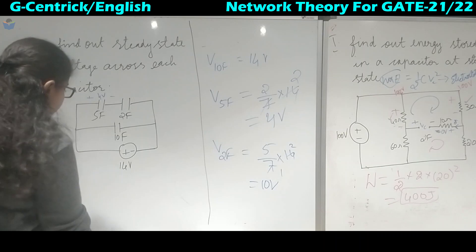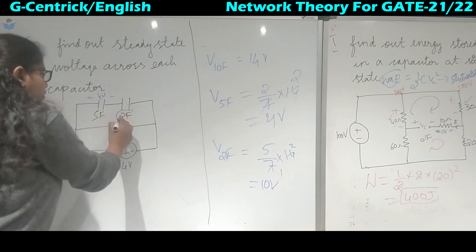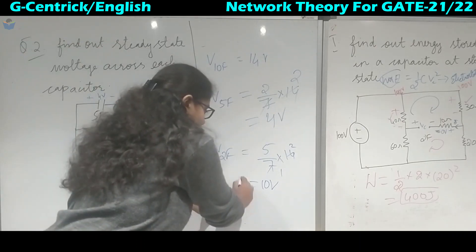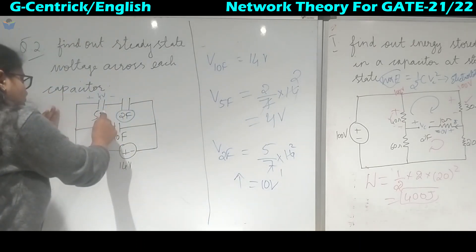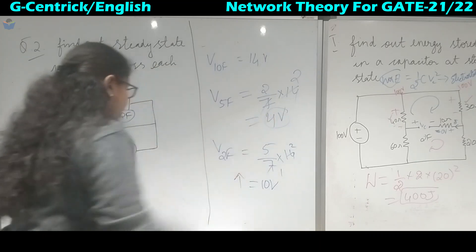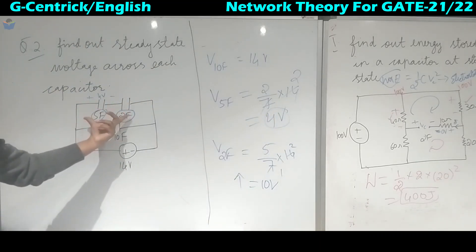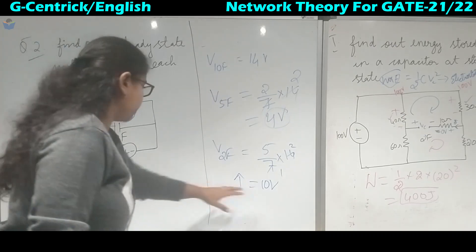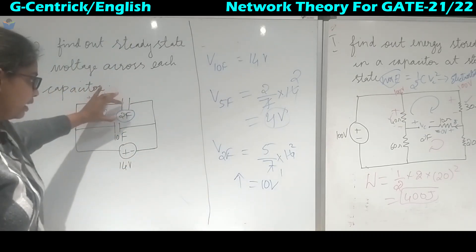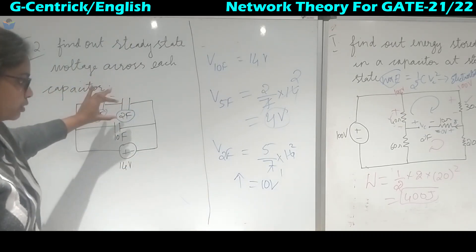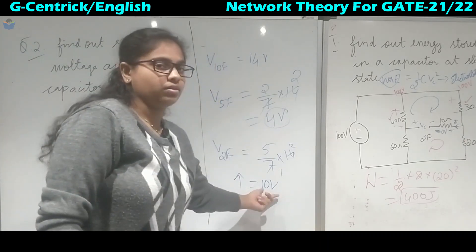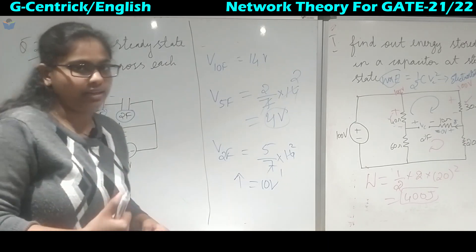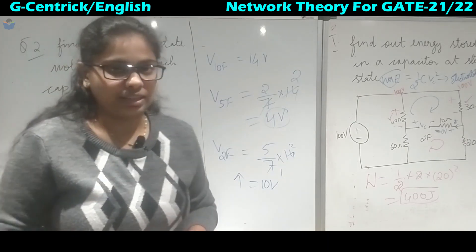From this, one conclusion can be made: if the value of the capacitor is less, then the voltage across it is high, and if the capacitor value is more, the voltage is less. For understanding purposes, whenever you find a capacitor with a smaller value, the voltage across that capacitor will be higher. Based on this concept, a related question has appeared in the GATE exam.